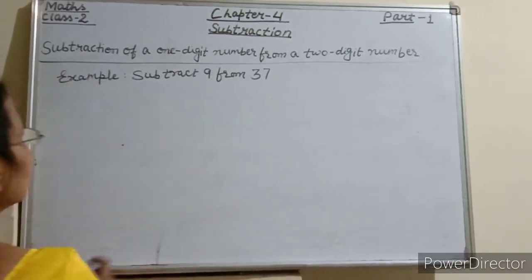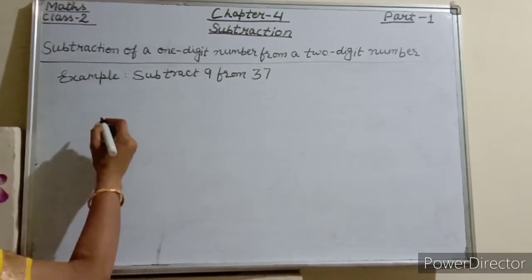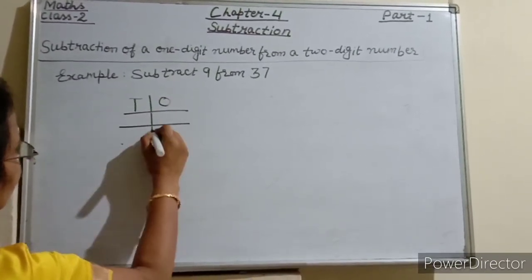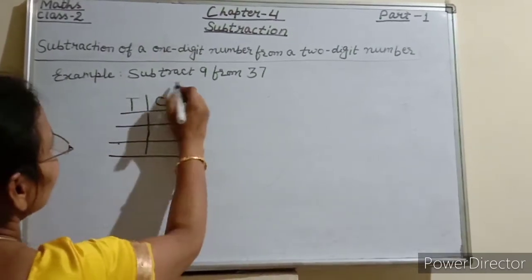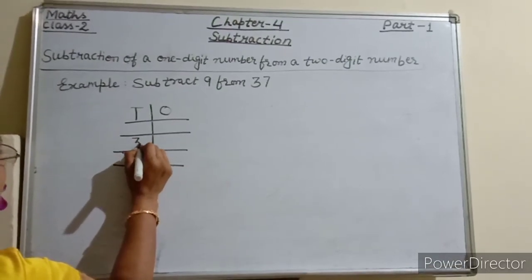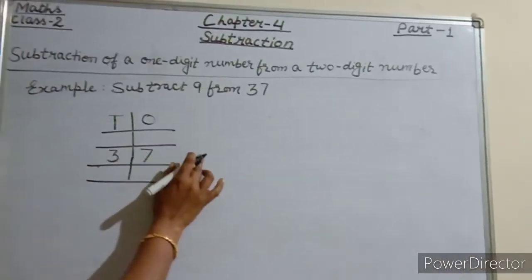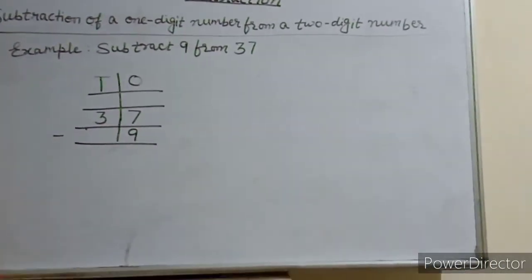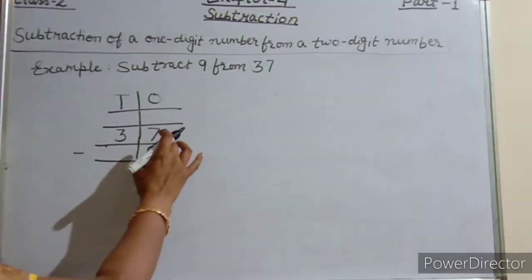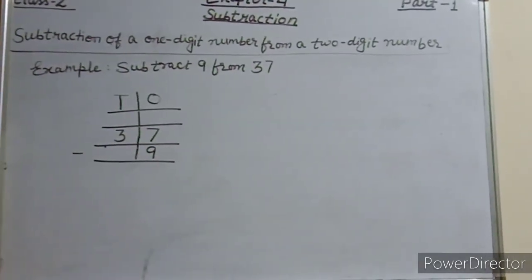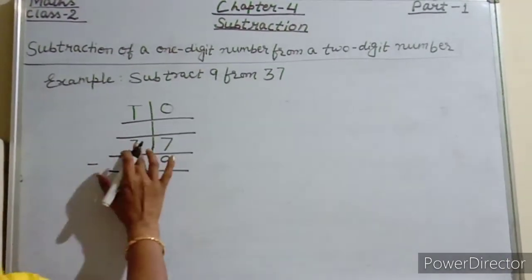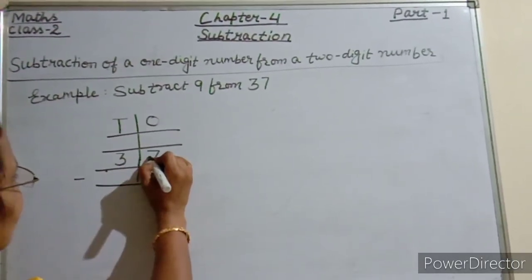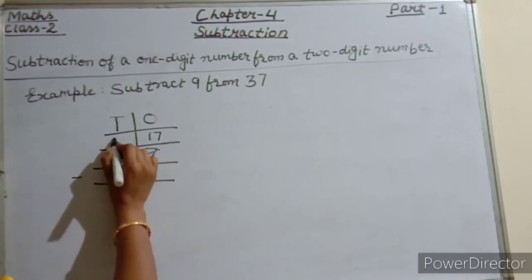Example 1: subtract 9 from 37. We write 37 in a column — this is the minuend — and write 9 below it — the subtrahend. Since 7 is less than 9, we cannot subtract 9 from 7, so we borrow from the tens column. This regroups 3 tens and 7 ones as 2 tens and 17 ones.